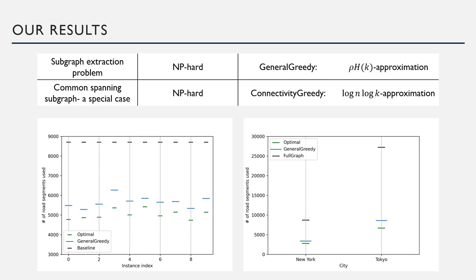We consider two versions of the problem, which we call the subgraph extraction problem and the common spanning subgraph problem. For both problems, we showed the NP-hardness. For the subgraph extraction problem, we proposed a greedy algorithm called GeneralGreedy and we showed that the approximation for this greedy algorithm is rho H(k) where H is the harmonic number function.